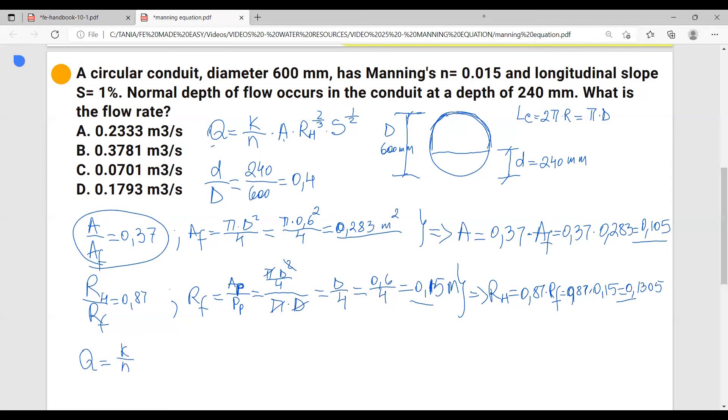Q equals k over n times A times R to the two-thirds times S to the one-half. Let's talk about each component.